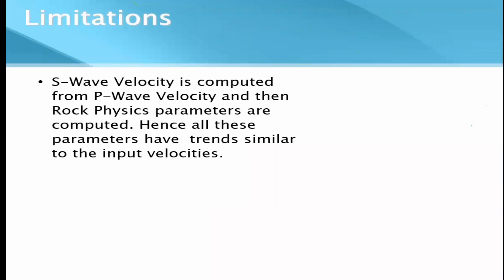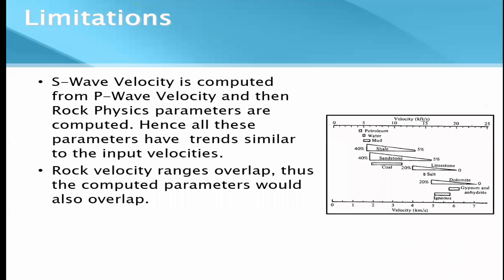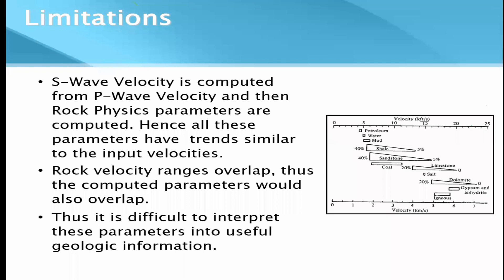There are certain limitations: if the S-wave velocity is computed from the P-wave velocity, all the computed parameters will show a similar trend, making interpretation more difficult. Everything is being controlled by a single parameter. Also, P-wave velocities of certain rock types overlap, so the computed parameters would also overlap. In reality, if certain rock types have overlapping P-waves, their shear waves may not overlap. When everything is computed from the P-wave, it becomes difficult to interpret the resulting rock physics parameters into useful geologic information.